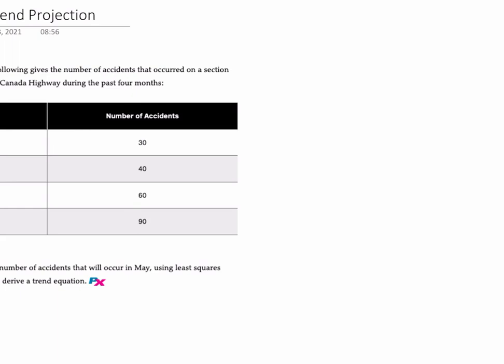The nature of our problem is this. We're given a number of accidents that occurred on the Trans-Canada Highway during the past four months, January through April, and our requirement is to forecast the number of accidents that will occur in May using least squares regression to derive a trend equation.